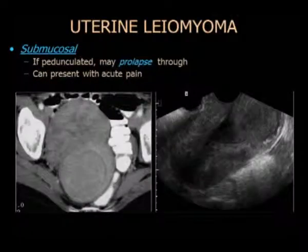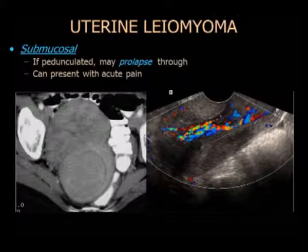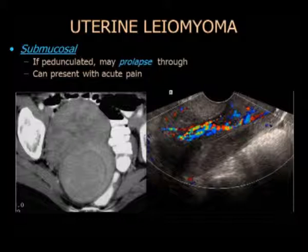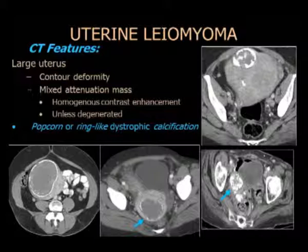Acá un caso de una paciente con fibroma en la submucosa: hay un prolapso en la zona cervical con el fascículo cerebrovascular que se arrastraba con él, causando dolor agudo. Las características del TAC de fibromas incluyen imágenes en pochoclo, deformación en el contorno, distintas atenuaciones dependiendo del grado de degeneración y el útero agrandado.